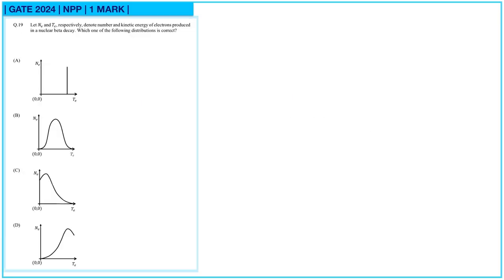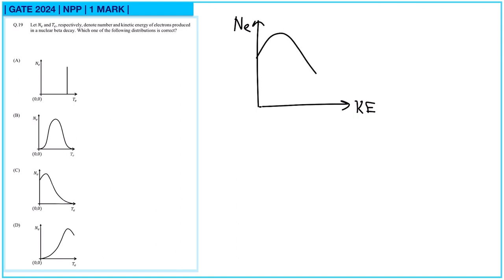Next question: let Ne and Te respectively denote the number and kinetic energy of electrons produced in a nuclear beta decay. Which distribution is correct? Plotting Ne versus kinetic energy, as kinetic energy increases the number decreases — so the graph decreases. Option C is correct. You can verify this in any standard textbook.